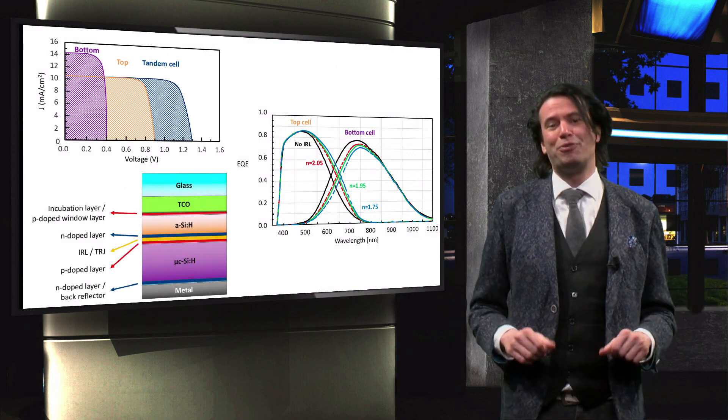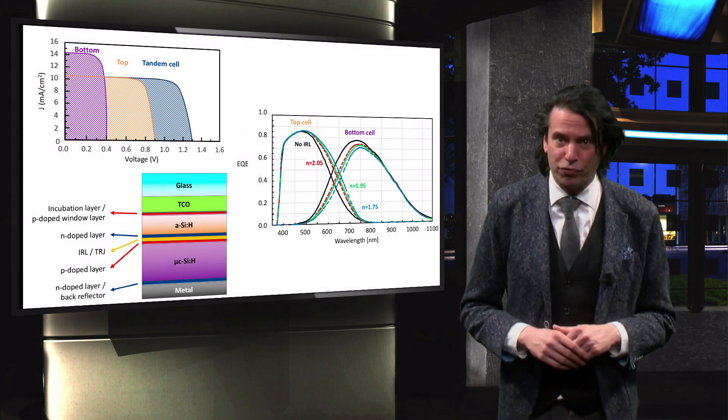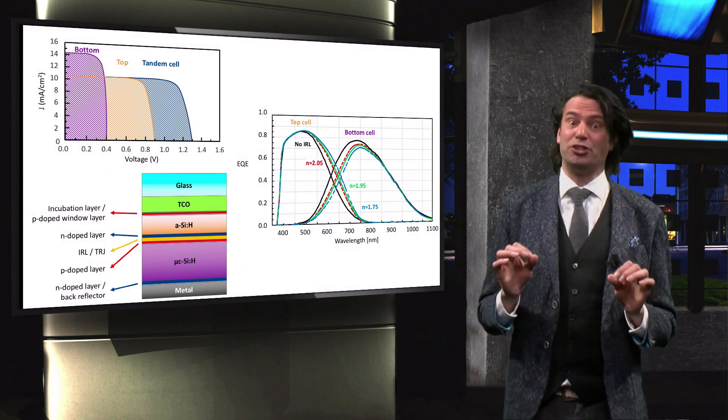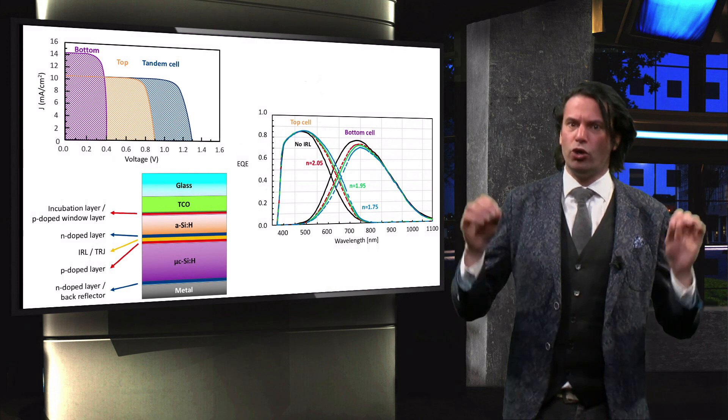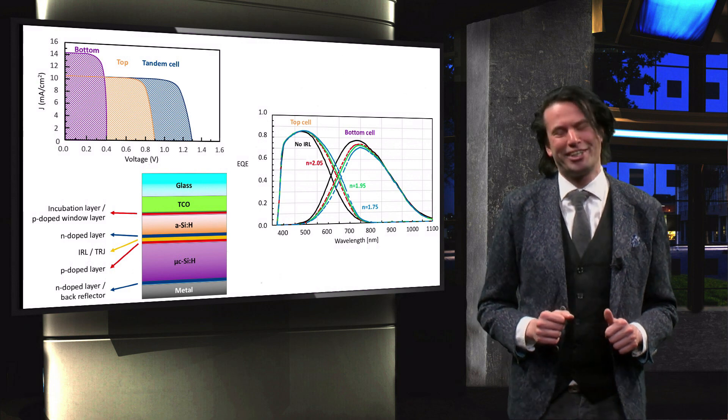Finally, we discussed the silicon oxide, that it is a suitable material for an intermediate reflective layer and due to its versatility, also an interesting material for multiple applications in a thin film solar cell.